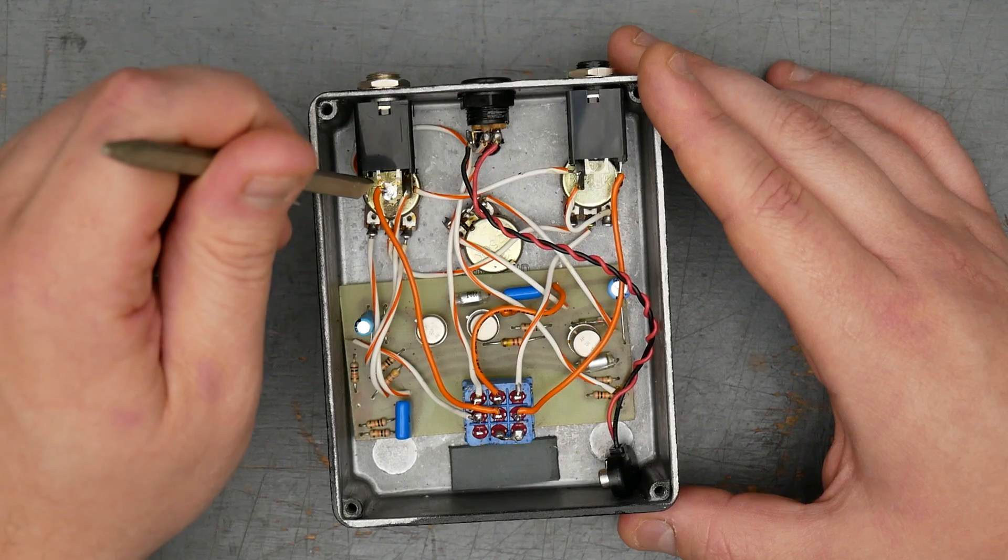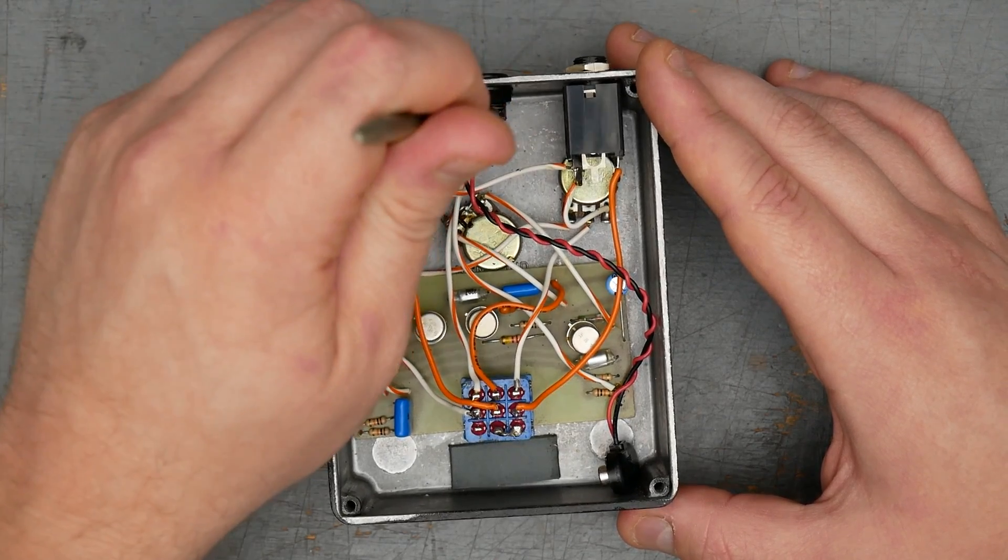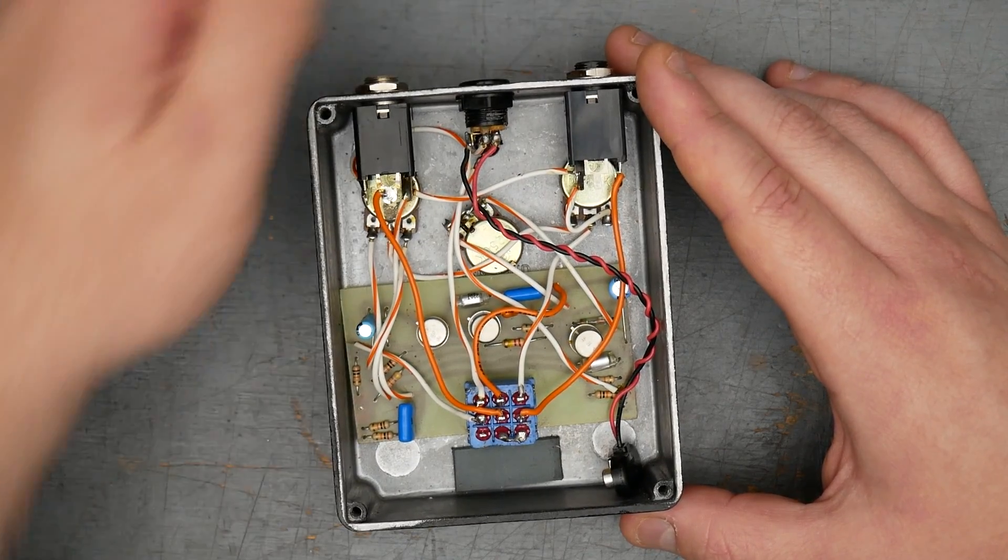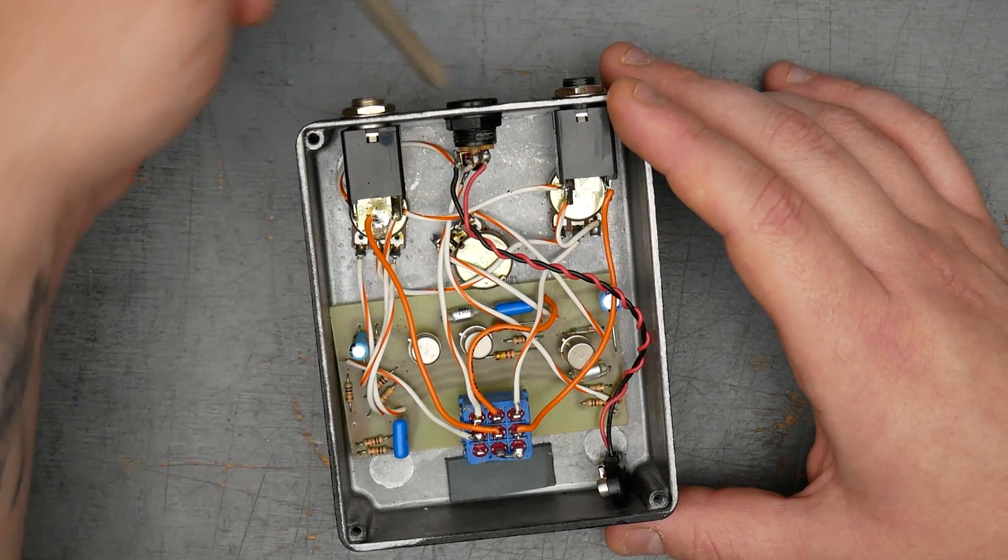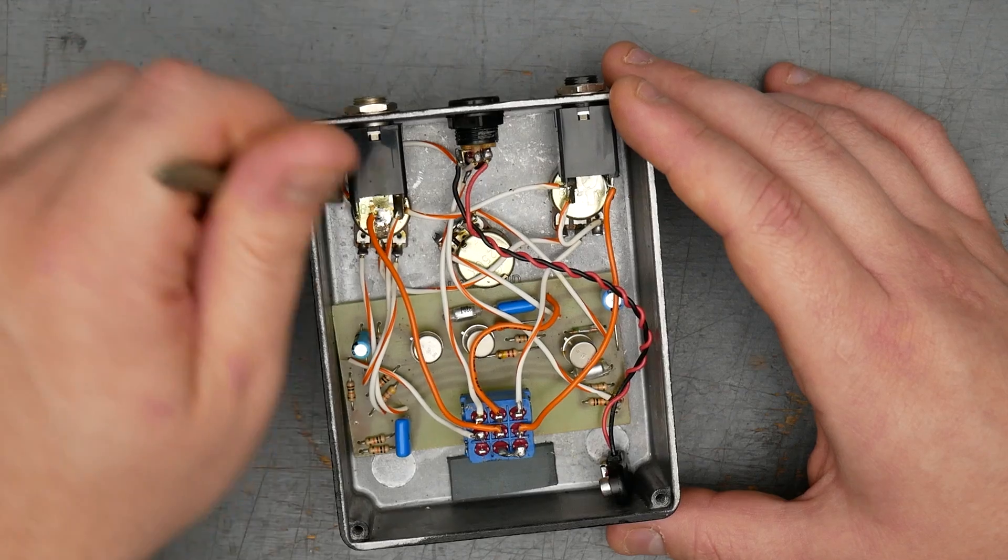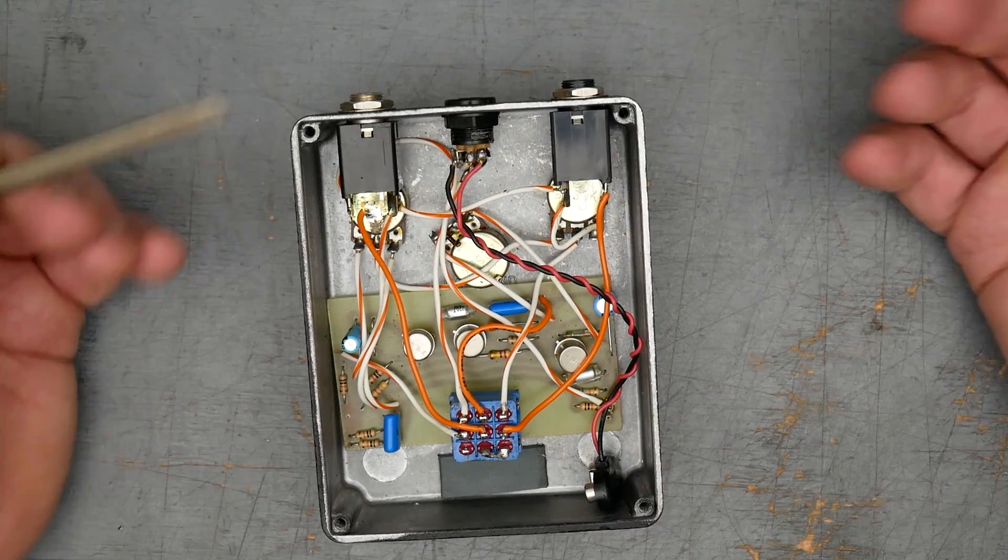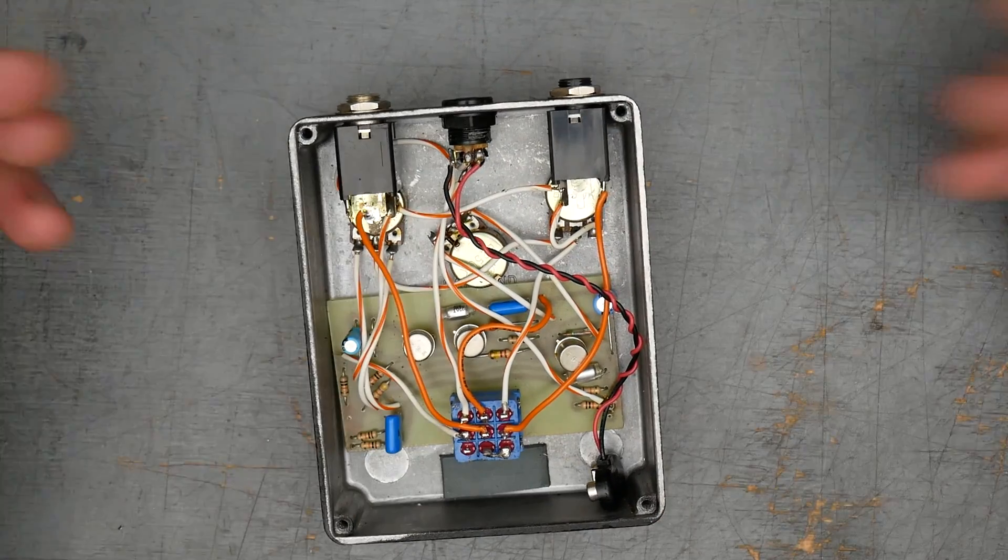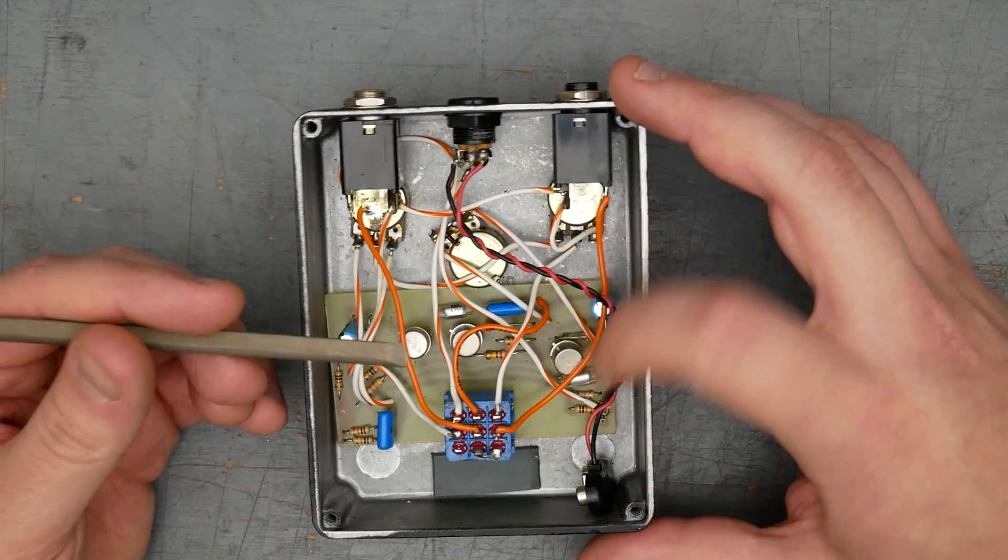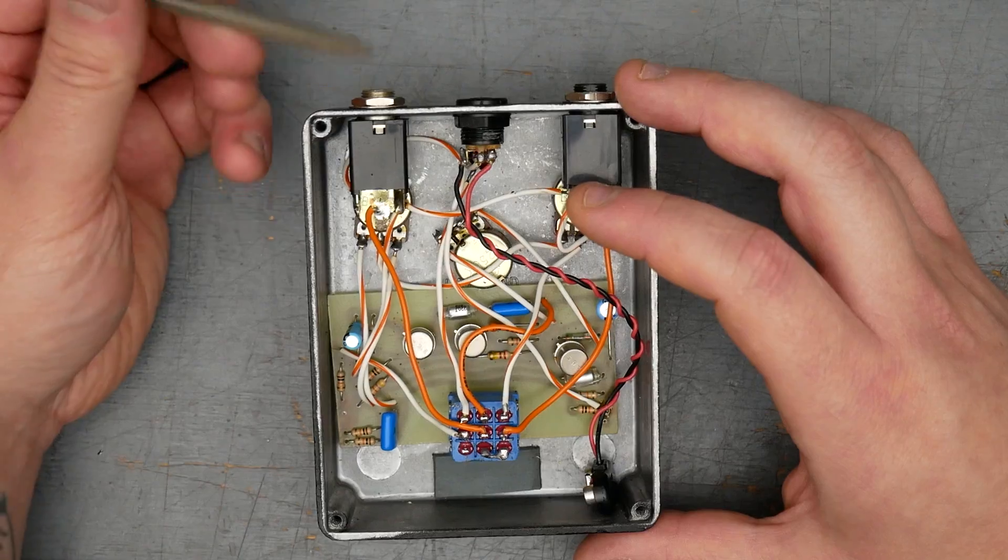So what they're doing is they're disconnecting ground from the power connections completely with the input jack. So when that's not plugged in, regardless of whether you're powering with a battery or with DC jack input, your ground, your power, the negative side is lifted. In this case, it's actually the positive side because this is a positive ground pedal. So it's actually lifting the positive. But the point is that the power is connected regardless of battery or DC power when the input jack is not inserted.